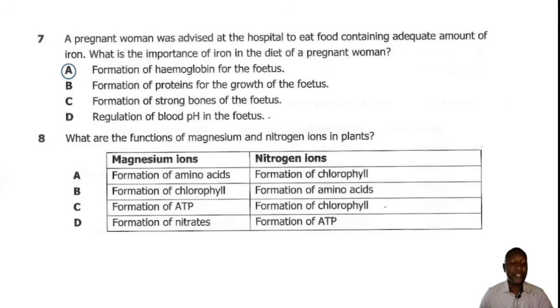Question 8. What are the functions of magnesium and nitrogen ions in the plants? Magnesium is an important macromolecule which is needed for formation of chlorophyll, and nitrogen ions are needed for formation of amino acids. So the correct answer here is B.